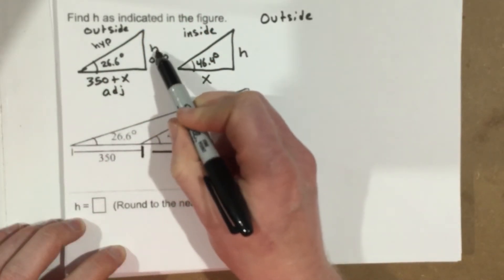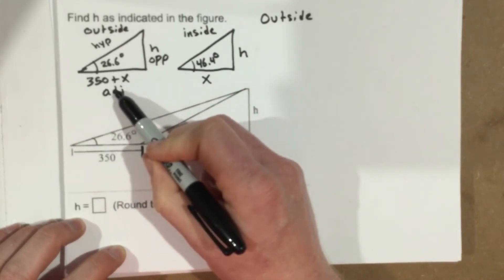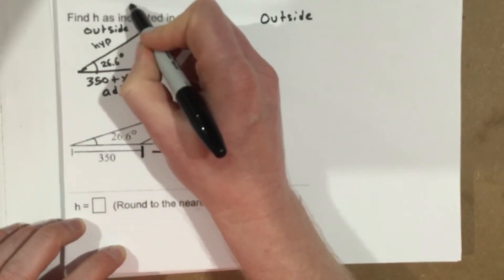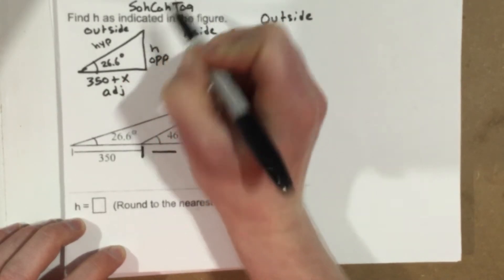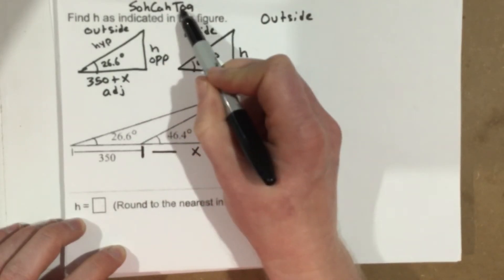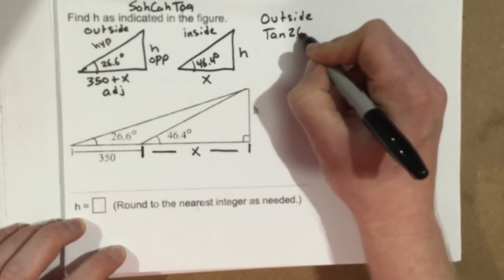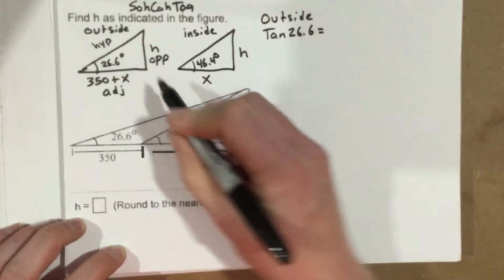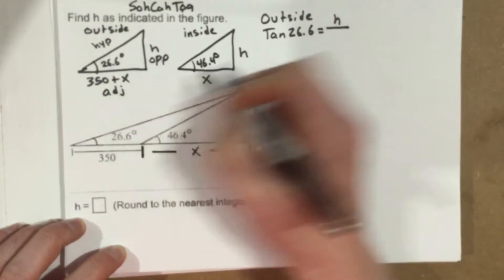So the opposite side is h, the adjacent side is 350 plus x. O and A, remember if we use SOH CAH TOA here. So if we use SOH CAH TOA, remember O and A is tangent. So I'm going to use tangent of the angle 26.6 degrees equals the opposite side which is h over 350 plus x.